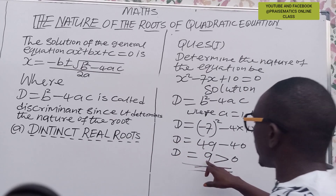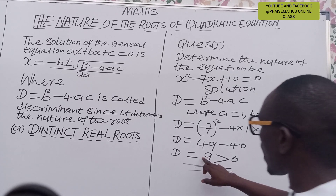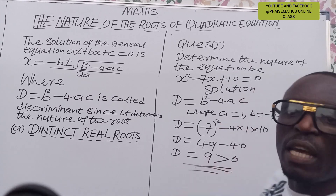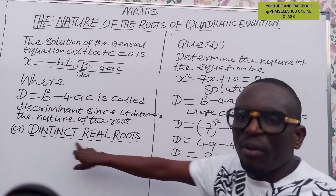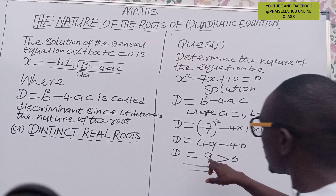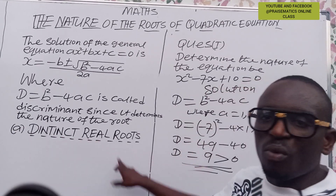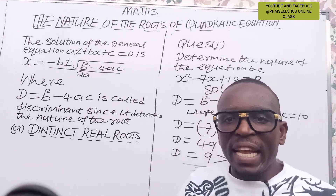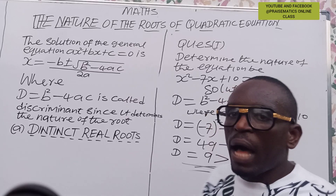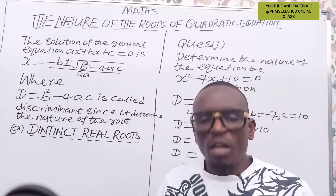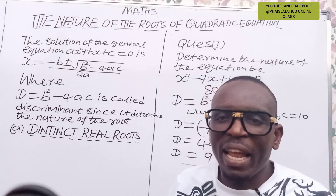The equation has distinct real roots because the discriminant is greater than zero. For example, if after solving we had gotten −9, that would mean the discriminant is less than zero and it would not be distinct real roots. But since the discriminant is 9, which is greater than zero, it is called distinct real roots. In our next class we are going to treat complex roots and equal roots. Remember to subscribe to Prismatics Online Class. Goodbye.